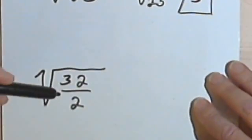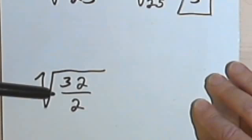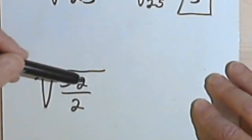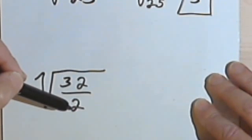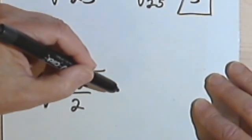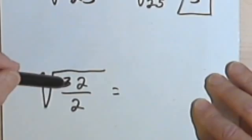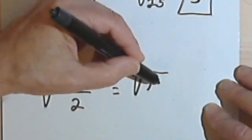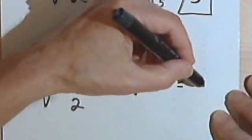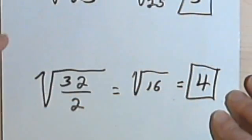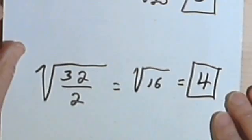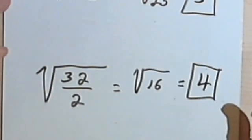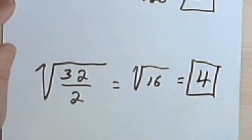Once again, just because you can do that, it doesn't necessarily mean that you want to. We could turn the square root of 32 over 2 into the square root of 32 over the square root of 2, but that wouldn't get us anywhere. Instead, it probably makes more sense to just divide 32 by 2 — in other words, reduce this fraction — and then we get the square root of 16, which is 4. So the lesson here is, before you jump into a problem, take a look at the numbers and see what makes the most sense.